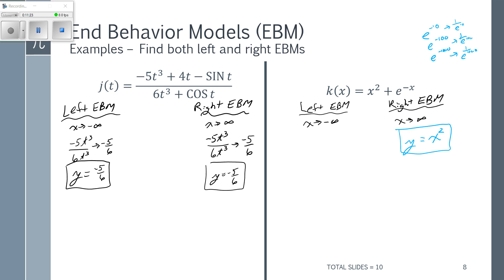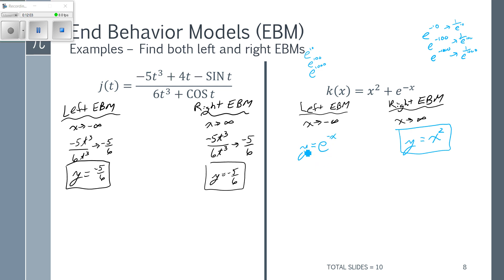For the left end behavior model, as X goes to negative infinity, I again have a polynomial and an exponential, and exponentials tend to grow faster — but I need to check the exponent sign. Now X is negative, so plugging in -10 gives e^(-(-10)) = e^10; plugging in -100 gives e^100; plugging in -1000 gives e^1000. So the exponents are now positive, meaning the exponential grows faster than the polynomial. Going to the left, my function behaves and looks like e^(-x).